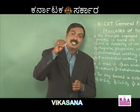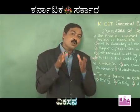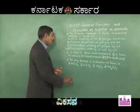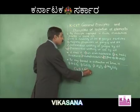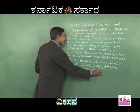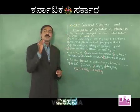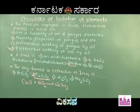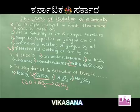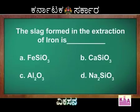Coke acts as a reducing agent. When limestone acts as a flux, CaO combines with silicon dioxide (SiO₂) to form CaSiO₃, which is calcium silicate. This slag formed in the extraction of iron is CaSiO₃. The right answer is calcium silicate — option B.